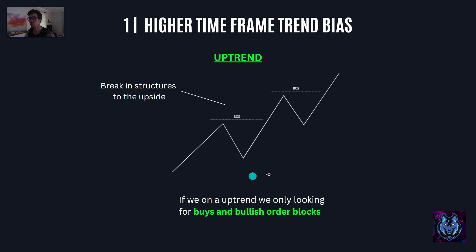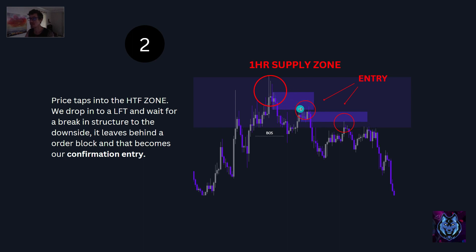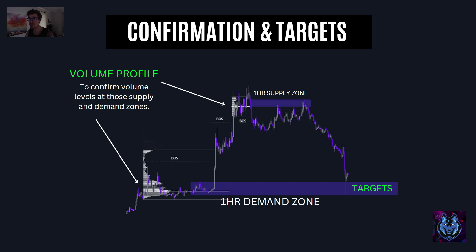Step one: higher timeframe trend bias. First we want to determine the bias of the trend. If price is going up with continual break in structures to the upside, we're in an uptrend and we're only looking for buys and bullish order blocks. In a downtrend, if price keeps breaking structures to the downside, we're only looking for sells and bearish order blocks.